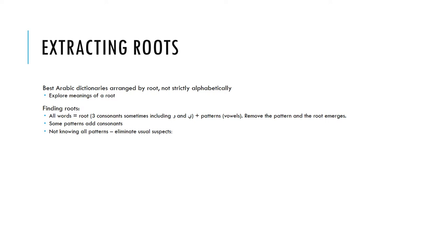Remember that wāw and yā are ambiguous — they can be consonants or vowels — and patterns are mostly vowels, but some patterns also add consonants. If we remove the pattern, the root will emerge. We can try to eliminate the usual suspects: for example, tā marbūṭa doesn't even count as a root letter — it just marks the feminine — so there is no tā marbūṭa section of the dictionary.